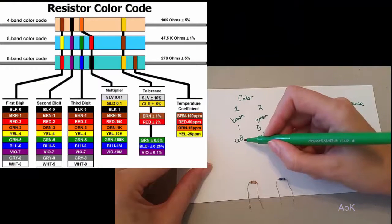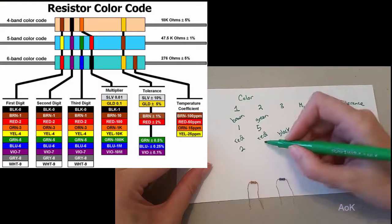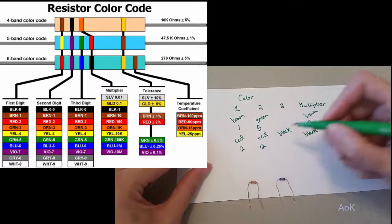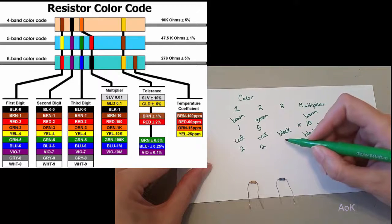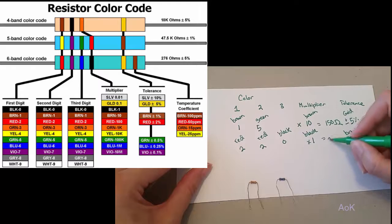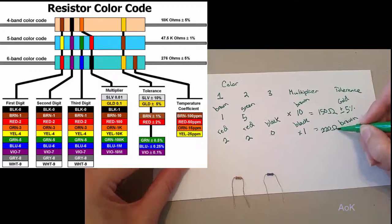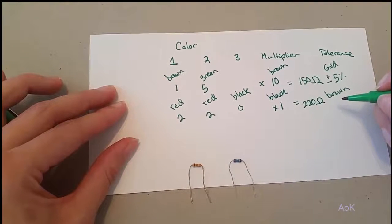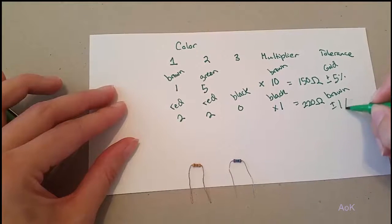The red represents 2. The second red also 2. Black represents 0. And the multiplier is only a 1. So that's 220 times 1 equals 220 ohms. And the tolerance for brown is the equivalent of plus or minus 1%.